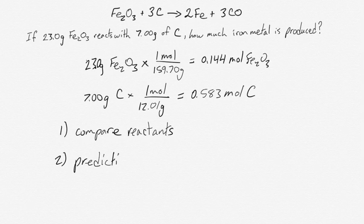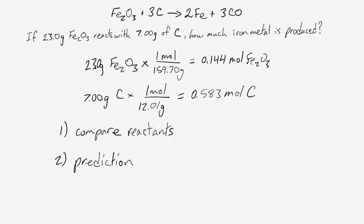And the second way is predictions, where you use the amounts of each reactant to predict how much metal gets made, and whichever number is smaller, that's the amount that actually gets made.